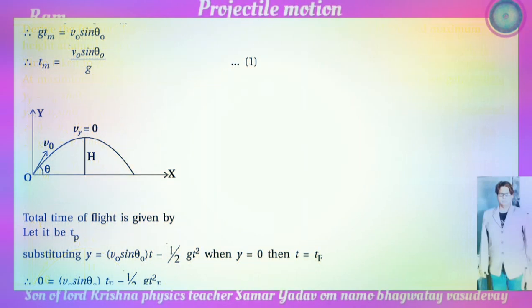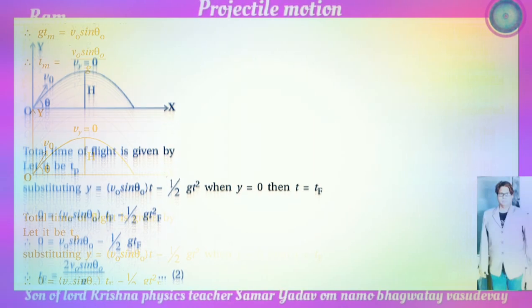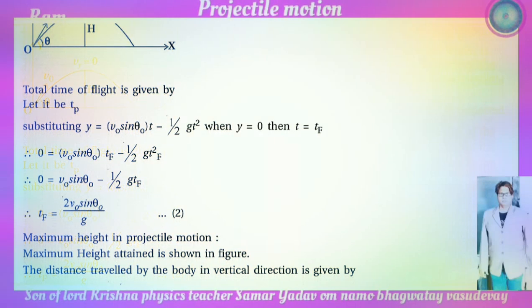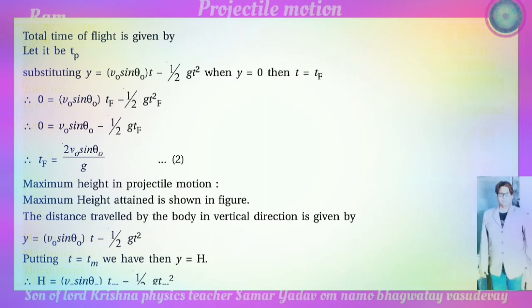For total time of flight T_f: substituting y equals zero and t equals T_f into y equals v-zero sin theta-zero t minus one-half g t-squared, we get: zero equals v-zero sin theta-zero T_f minus one-half g T_f squared. Dividing through, zero equals v-zero sin theta-zero minus one-half g T_f, therefore T_f equals 2 v-zero sin theta-zero divided by g.